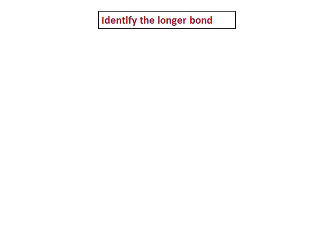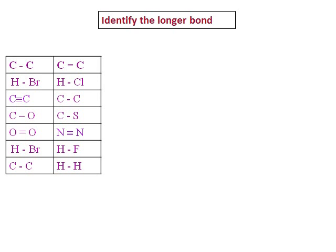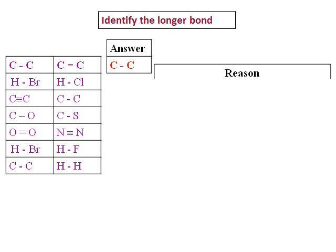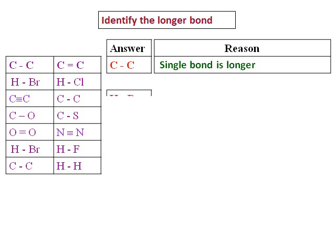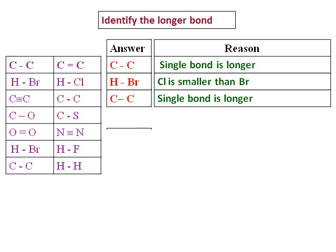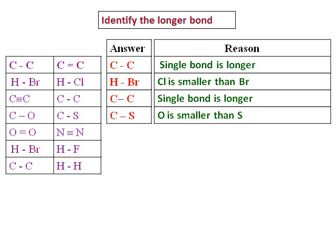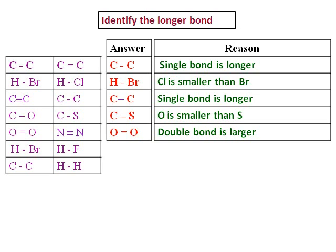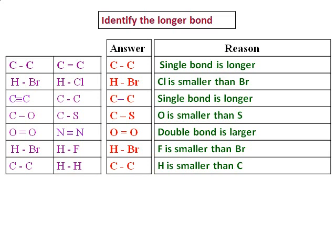Let's do some questions on this: identify the longer bond. Carbon-carbon single bond vs. carbon-carbon double bond — the single bond is longer. HBr vs. HCl — HBr is longer because bromine is larger than chlorine. Carbon-carbon triple bond vs. carbon-carbon single bond — the single bond is longer. Carbon-oxygen vs. carbon-sulfur — carbon-sulfur is longer because oxygen is smaller than sulfur. Oxygen double bond vs. nitrogen triple bond — the double bond is longer. For the remaining pairs, fluorine is smaller than bromine and hydrogen is smaller than carbon.